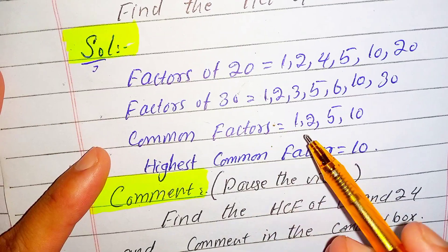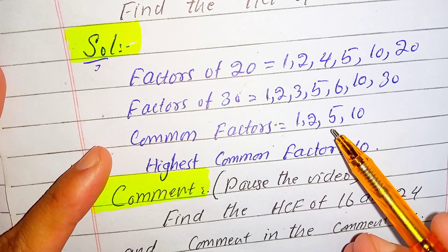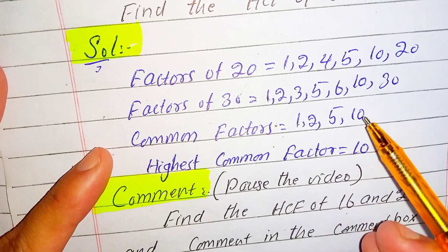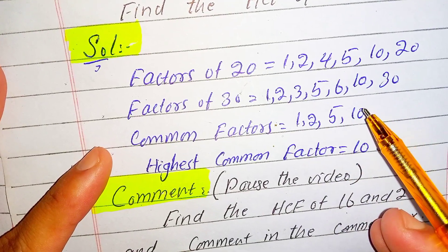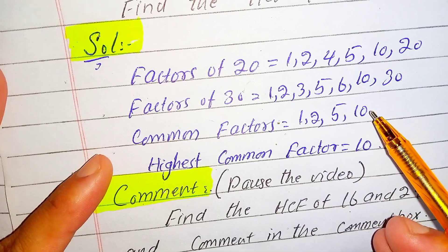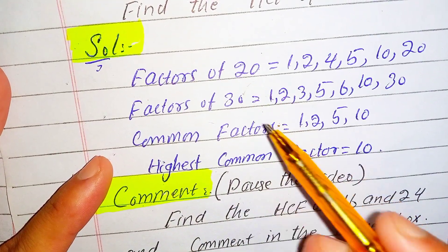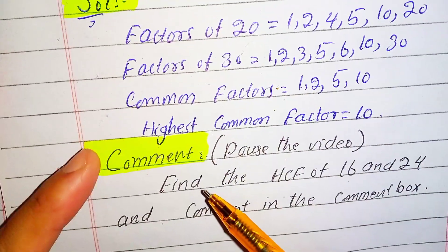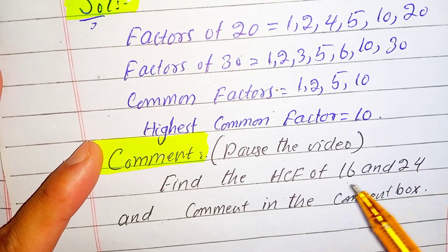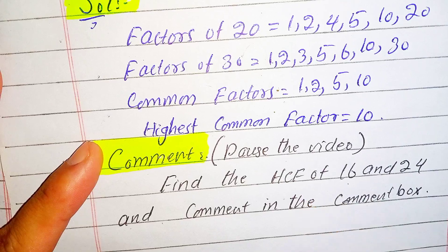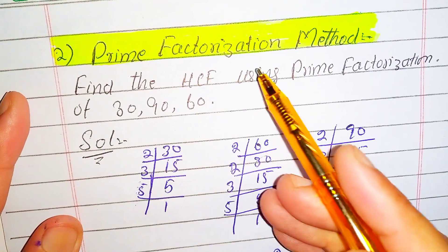Now we look for the highest common factor. Among 1, 2, 5, and 10, which are all common factors, 10 is the highest common factor. So the HCF of 20 and 30 is 10. Here we will pause the video — find the HCF of 16 and 20 and comment the answer in the comment box. The second method is the prime factorization method.